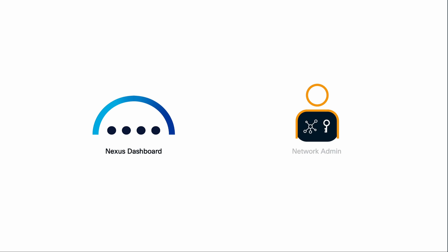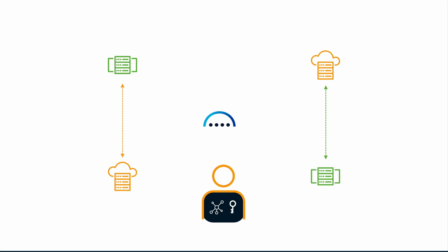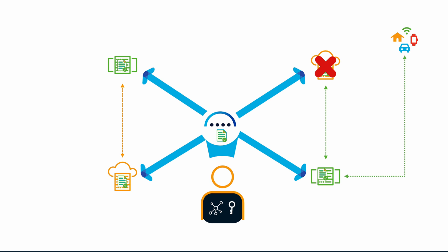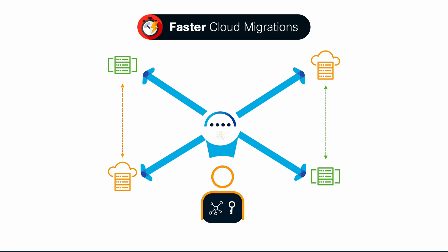This sounds great, Max — but what does this mean for the network admin? It means we can run a common networking model across multiple sites and clouds, which reduces operational overhead. Think of network services that are configured once and automatically deployed anywhere, or consistent disaster recovery plans, or even faster public cloud migrations by extending the network anywhere with the same security settings already defined on-prem.